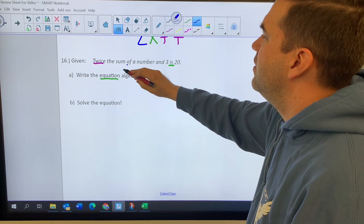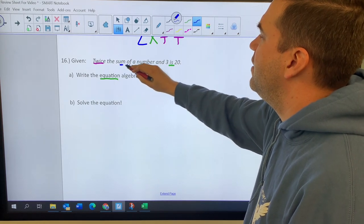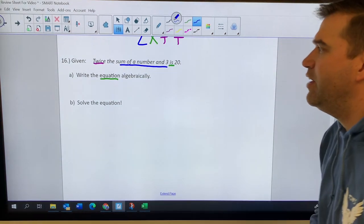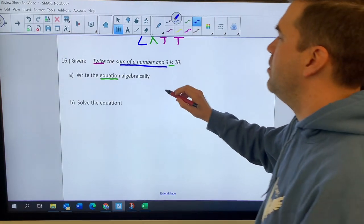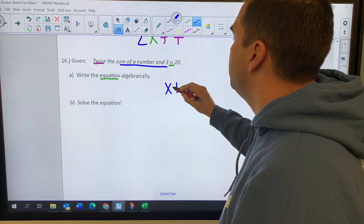I'm going to go with two. We've got to find the sum of a number and three, and then I've got to double it. So the sum of a number and three is going to be X plus three.